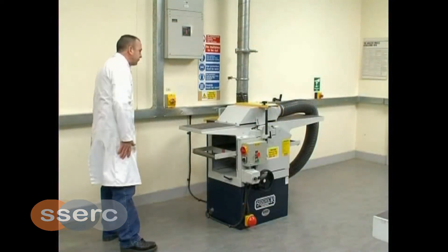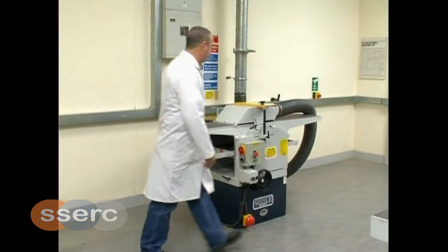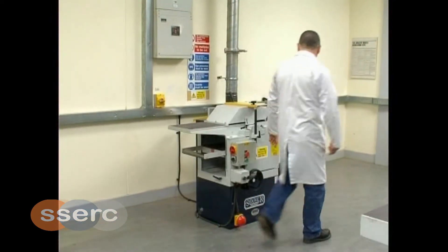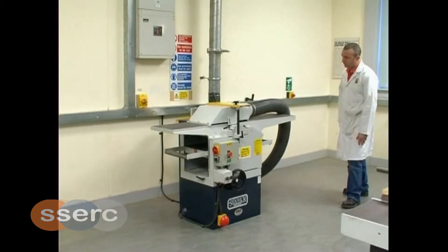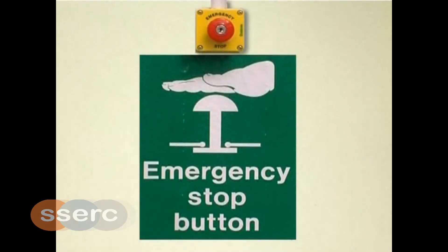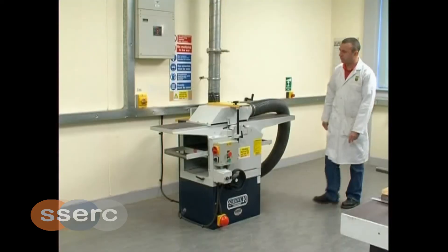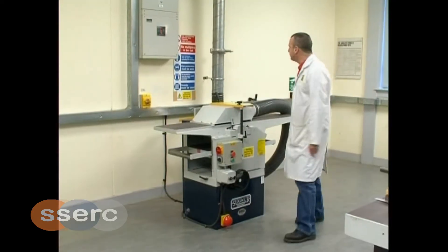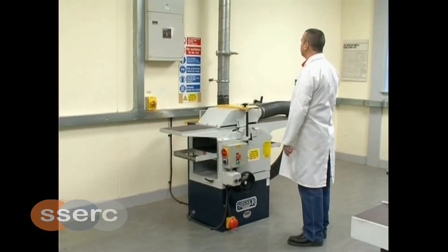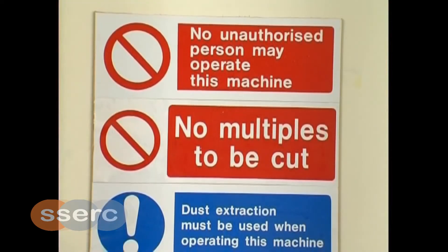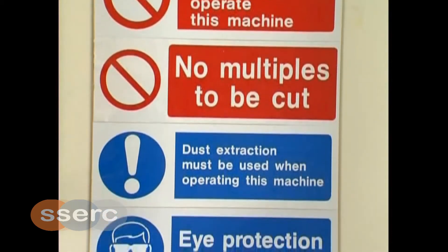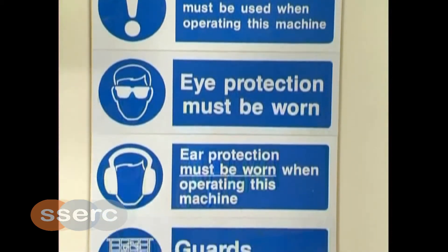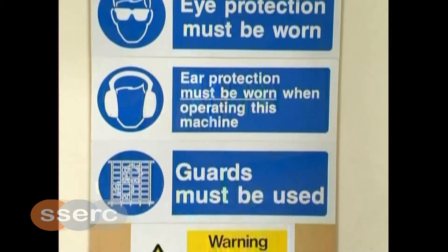Before use, ensure that the area around the machine is clear of any obstacles or hazards. Be aware of the location of the emergency stops. Observe the safety signs associated with the planar thicknesser. Ensure that you understand them and adhere to their instruction.